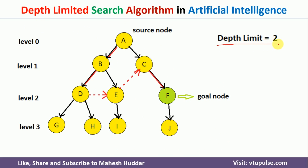In Depth-Limited Search, we put a restriction on depth — rather than going all the way to the leaf node, it will go only up to a specified depth and then come back to the right-hand side of the tree. We will start at root node A. In this case, we have set the depth as 2. This node is at depth 0 (level 0). It will go to the left side, that is B, at level 1, and then to D at depth 2. D is not a goal node, and we have reached the depth limit.